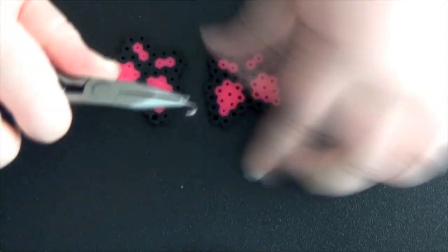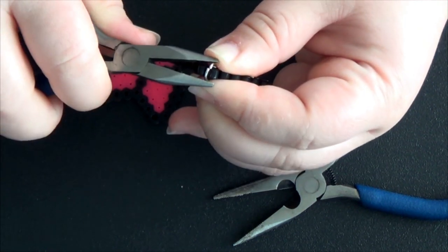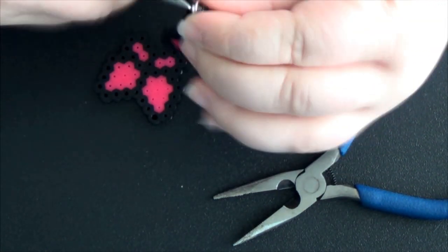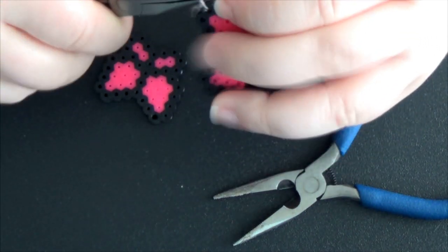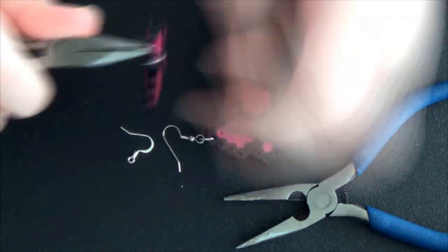Then I'm going to take my large jump ring, open it up, feed it through the project, and attach the earring hook at the same time. I want to make sure it's nice and secure so the earrings don't fall off while wearing them. Then we'll repeat that process for the second earring.